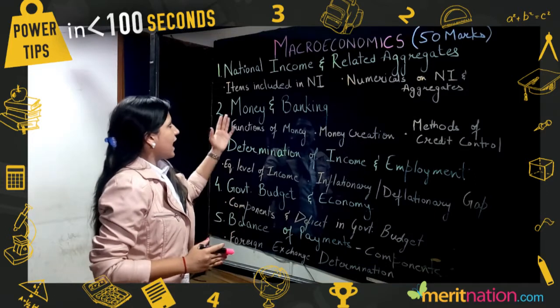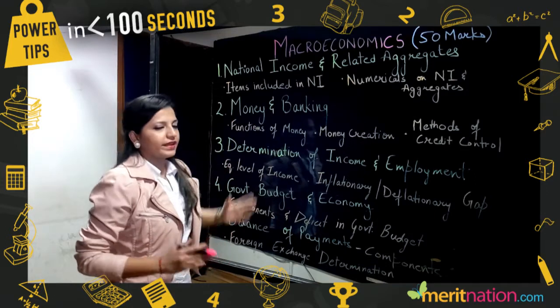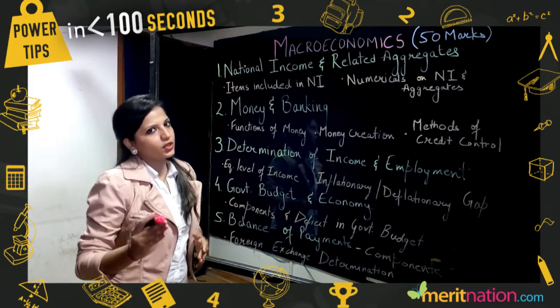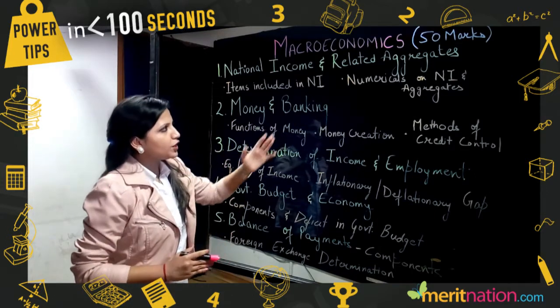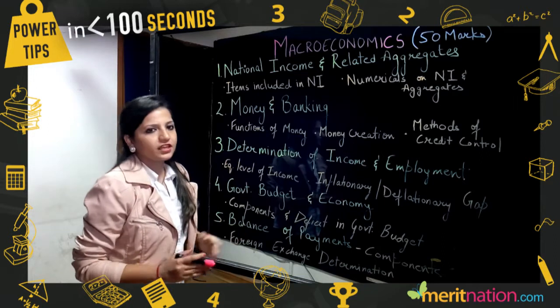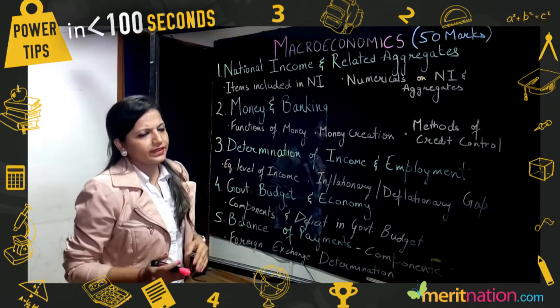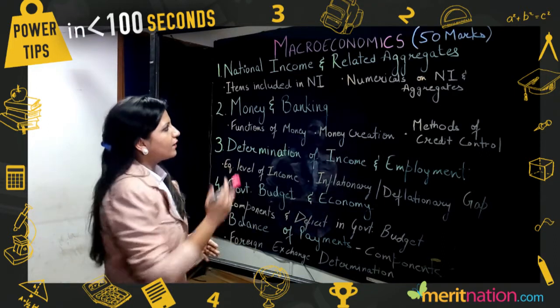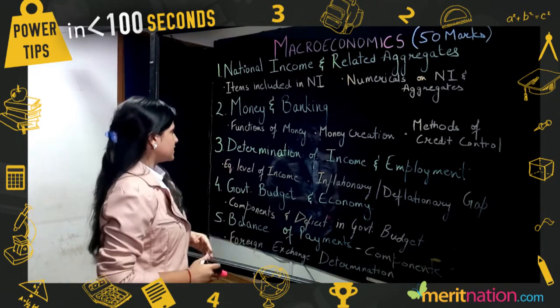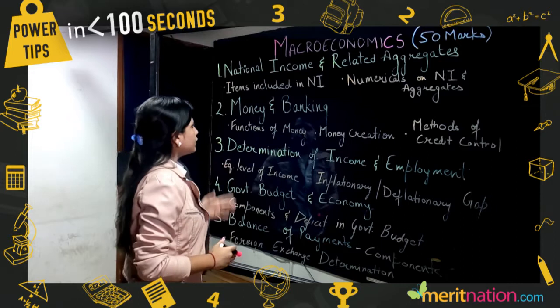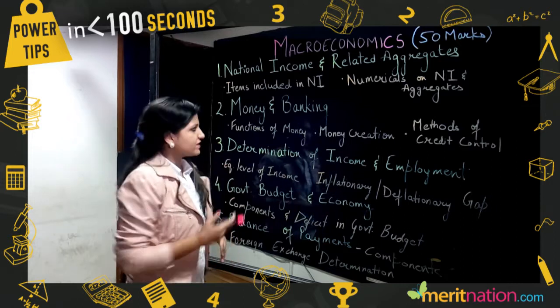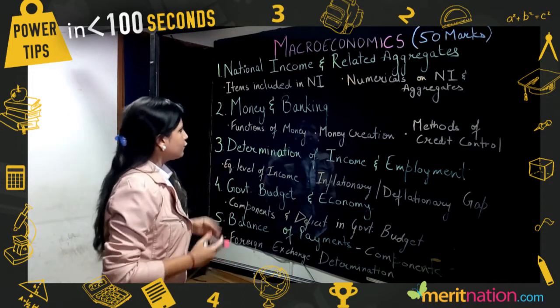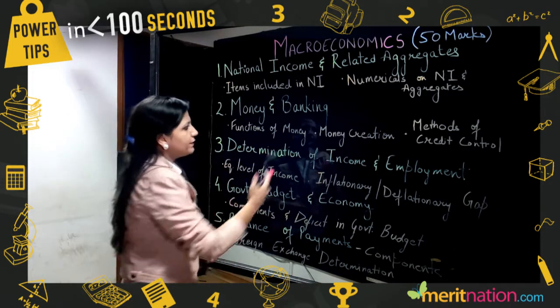In Chapter 1, the key topics are items included in national income and domestic income, calculation of national income, and its aggregates like personal income and private income — these are the most important ones.